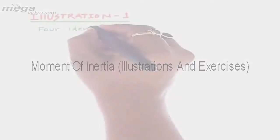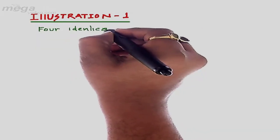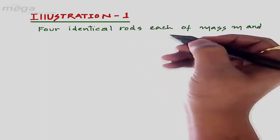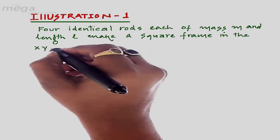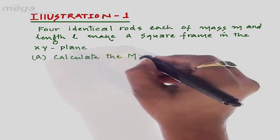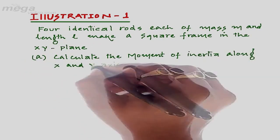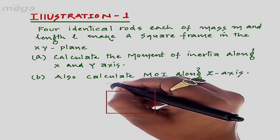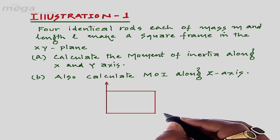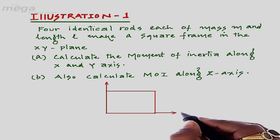Today we are going to explain some illustrations based on moment of inertia and finally we will do the exercises. Four identical rods are given, each having mass m and length l, and they make a square frame in the xy plane. We have to calculate the moment of inertia along the x-axis, the y-axis, and the z-axis. Let's consider this axis as the y-axis and this axis as the x-axis.